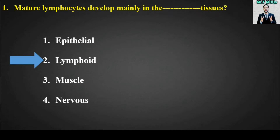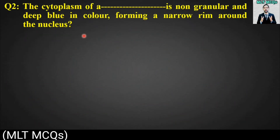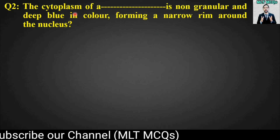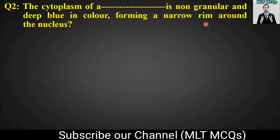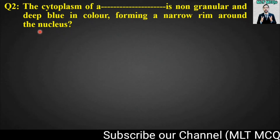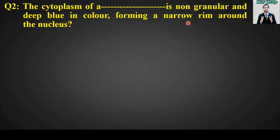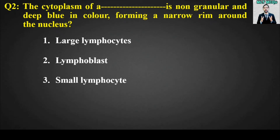MCQ number two: the cytoplasm of a blank is non-granular and deep blue in color, forming a narrow rim around the nucleus. Options are large lymphocytes, lymphoblasts, small lymphocytes, or monoblasts. The right answer for this MCQ is option number two, lymphoblasts.